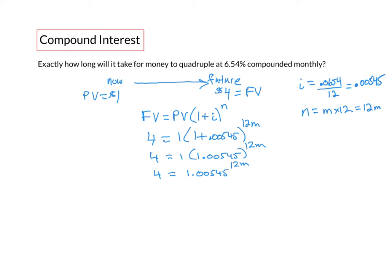Now our variable m is part of the exponent so we want to isolate that. How do we do that? Well we do the opposite operation and the opposite operation of taking an exponent of something is taking the logarithm of something. In financial mathematics we mostly use the natural logarithm so we'll take the natural logarithm of both sides so ln of 4 is going to equal the ln of 1.00545 to the 12m.